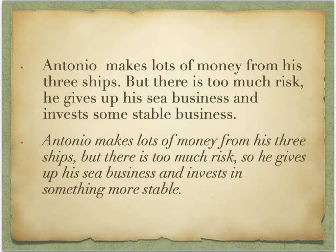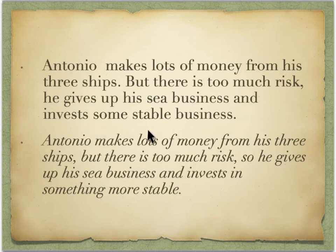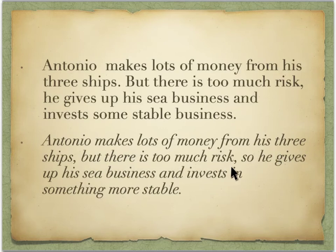Again, we have some problems with sentence structure. The first sentence is fine: 'Antonio makes lots of money from his three ships.' The second starts with a conjunction, making it a fragment. Then: 'he gives up his sea business and invests some stable business' — 'invest' usually takes 'in,' so 'invests in.' Also, 'business' is repeated, which is unnecessary. Revision: 'Antonio makes lots of money from his three ships, but there is too much risk. So he gives up his sea business and invests in something more stable.' I just said 'something' instead of repeating 'business.'